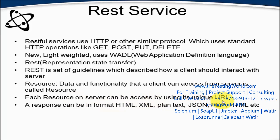Each functionality can be accessed by a URI. The advantage of REST services is that rather than accessing the complete application, we can access only one functionality, and each functionality can be accessed by its unique URI. In SOAP services, accessing via WSDL gives the complete application; but in REST, we can use WADL for the full application or a specific URI for a single functionality. REST also supports many formats for requests and responses: HTML, XML, plain text, JSON, PDF, and many others.